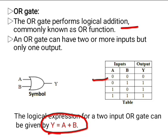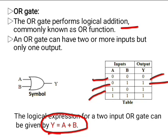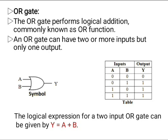In case 1, when both inputs are low, the output Y becomes low. When input A is low and B is high, the output Y becomes high. In case 3, when input A is high and B is low, the output becomes high, that means 1. When both inputs A and B equal 1, the output Y becomes high, that is equal to 1. In general, for an N-input OR gate, the output is high if any one or more inputs are high. In other words, the output is low only if all inputs are low.